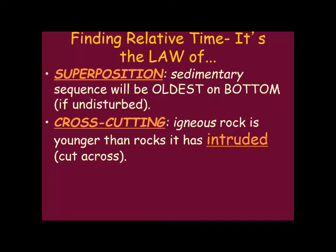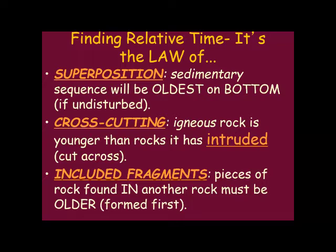Can you think of some things that could cut across a layer? A fault is an example — where layers are offset. An igneous intrusion could also cut across a layer. Additionally, any piece of rock within another rock has to be older than the rock it's in. If you have a sedimentary rock, the sediments in it have to be older than that particular sedimentary rock itself.